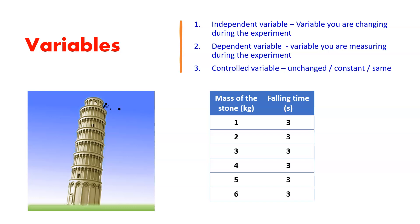What is the dependent variable? Dependent variable means what you are measuring during the experiment. In this experiment, you are measuring the falling time. The variable that you are measuring during the experiment is called the dependent variable. In this experiment, falling time is the dependent variable because each time you repeat the experiment, you are measuring falling time.